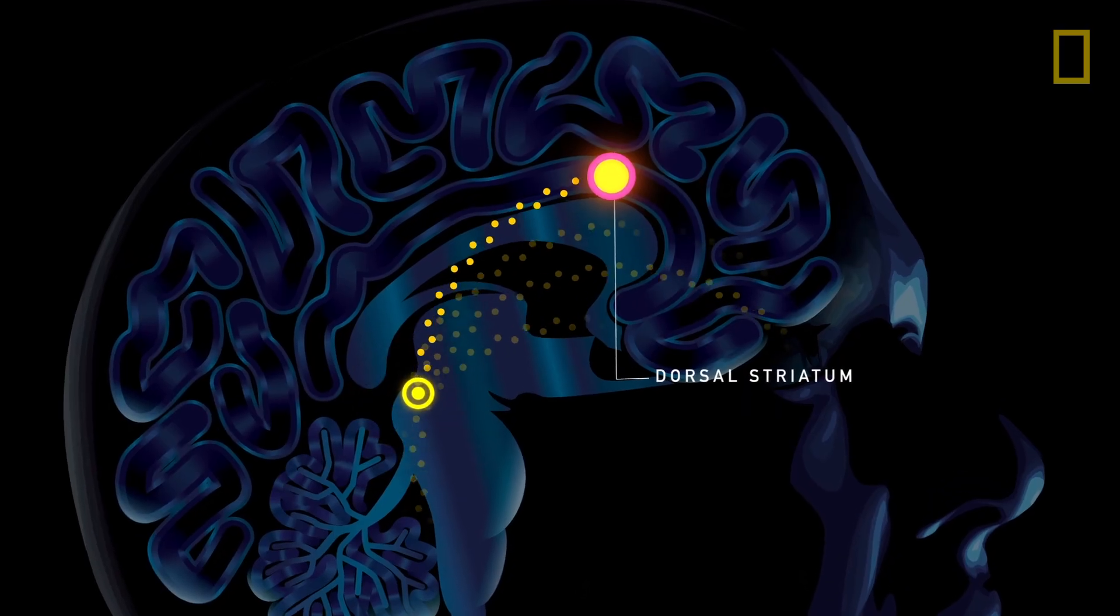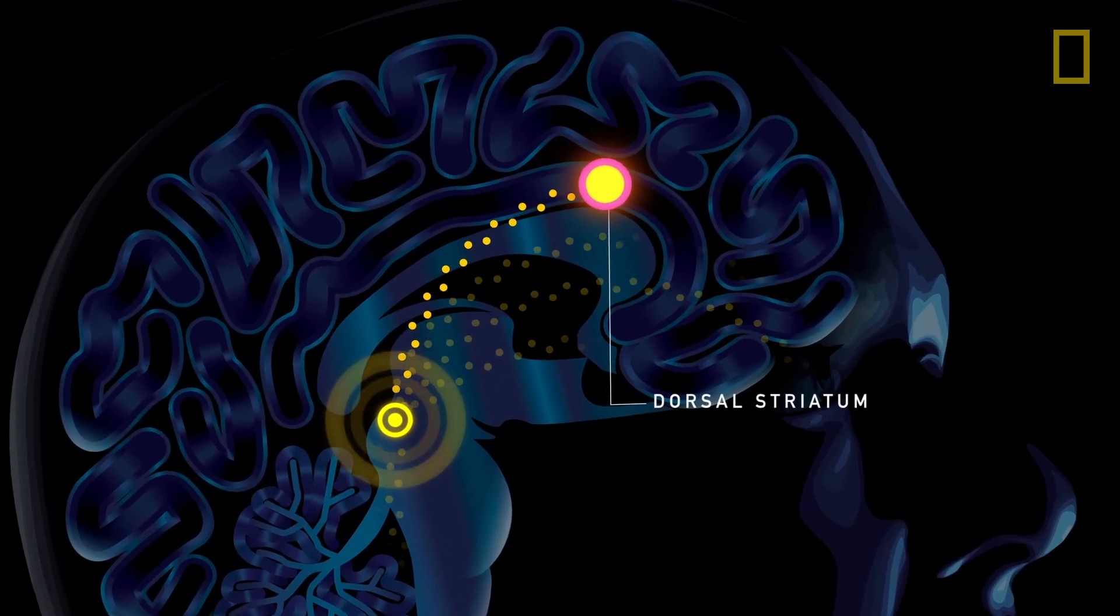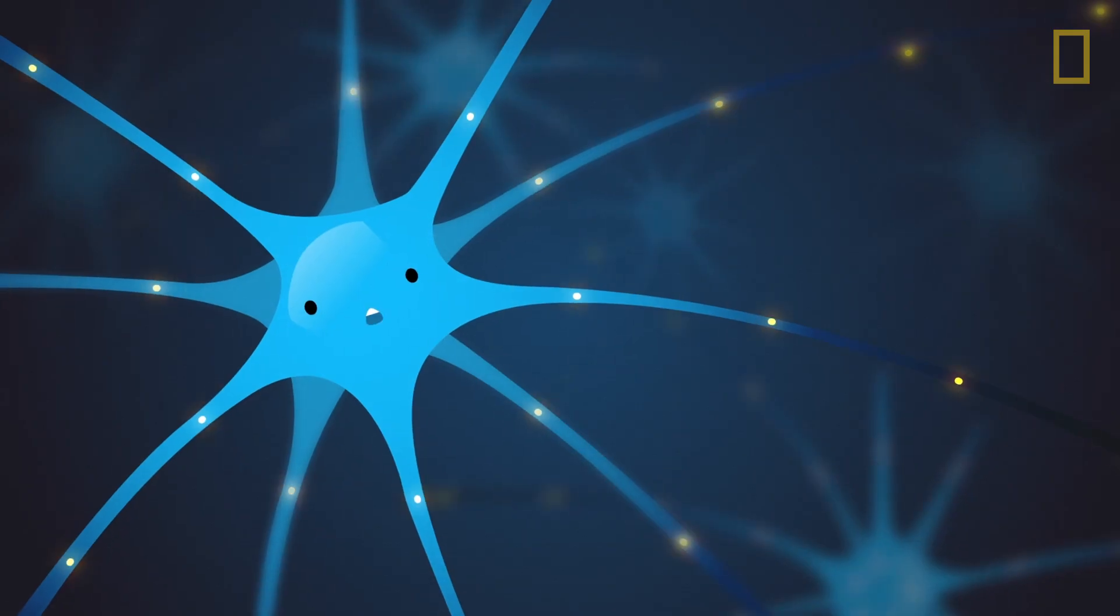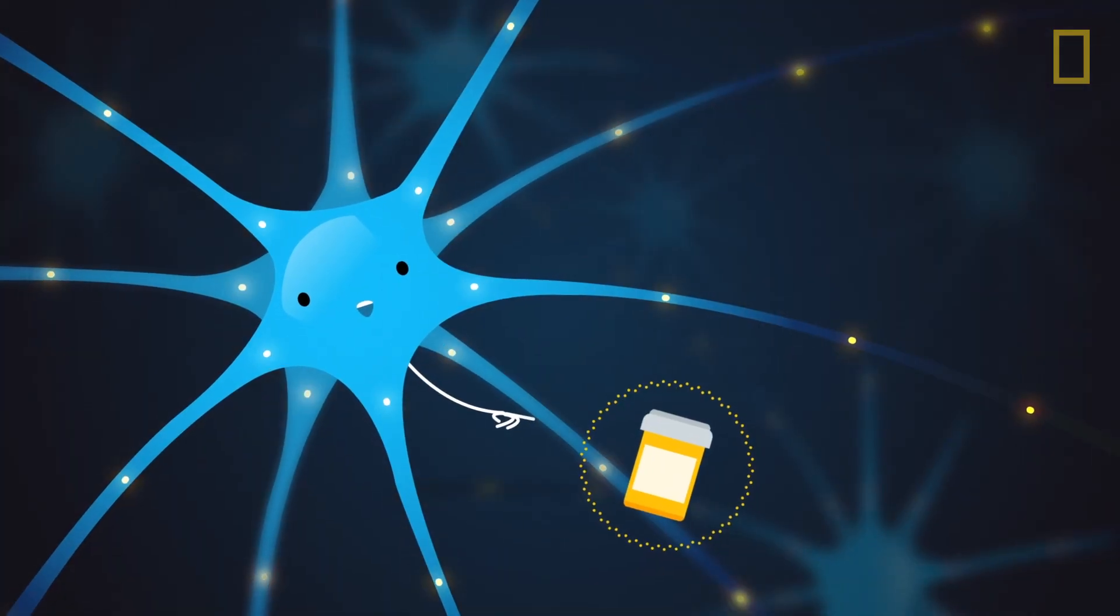It flows throughout the brain's craving circuit, including the dorsal striatum, where brain nerve cells called neurons begin to form habits by identifying fun things that you've done, like buying drugs or cigarettes.